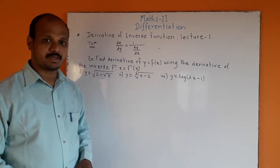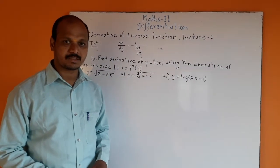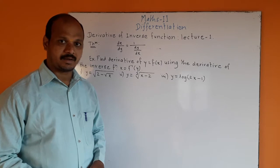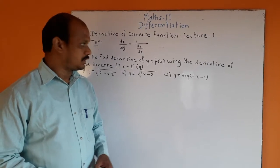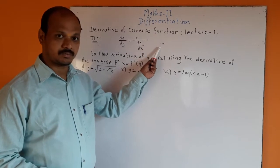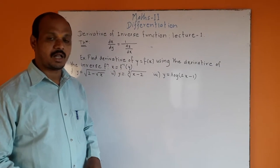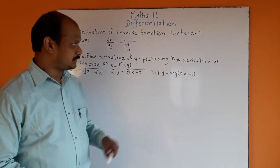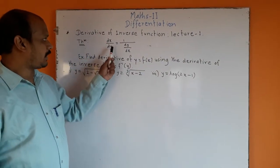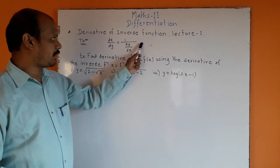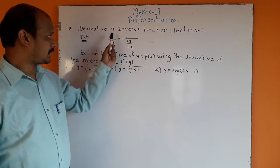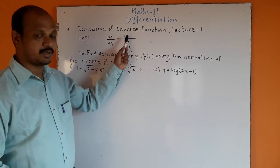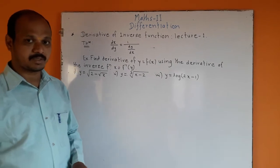Theorem: Let y = f(x) be a differentiable function of x on an interval I, and y is one-to-one, and dy/dx is not equal to 0. Also, if f inverse of y is a differentiable function, then dx/dy is equal to 1 upon dy/dx, where dy/dx is not equal to 0. So dx/dy is the inverse function of dy/dx, given by dx/dy = 1 / (dy/dx). Now we will see the examples on this topic.